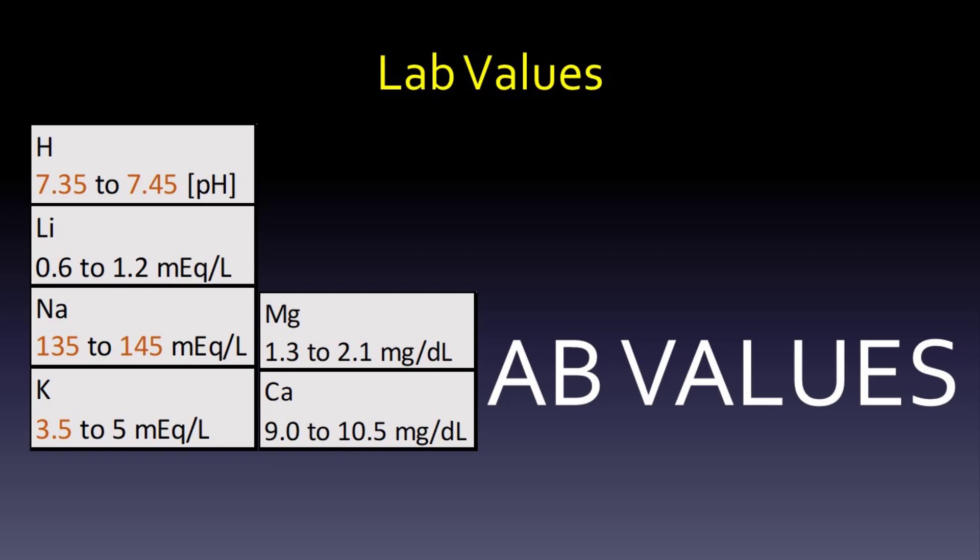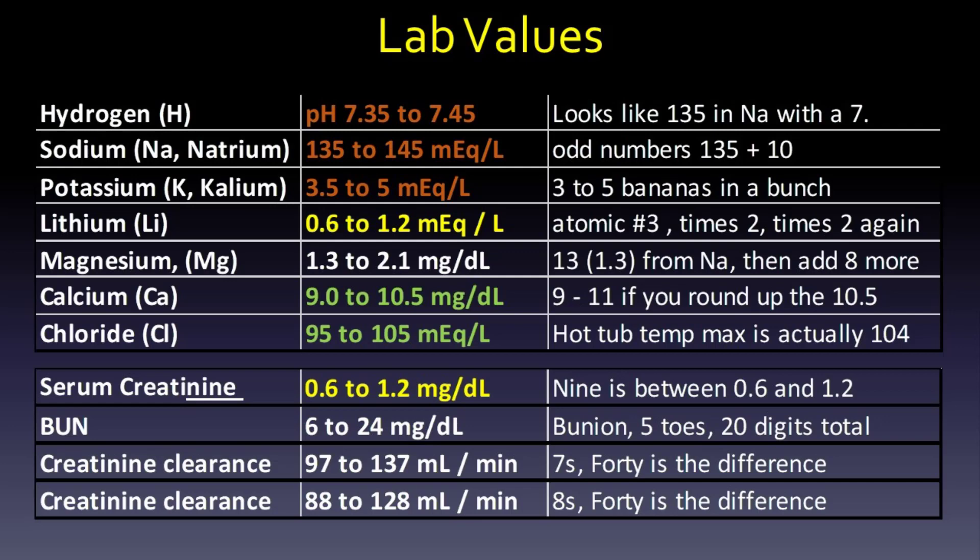You can take that 35 from sodium and make it the 3.5 from potassium — 3.5 to 5 milliequivalents per liter. So just a quick way to put hydrogen, sodium, and potassium together. Another mnemonic: underline the OD in sodium to make odd numbers — the first three odd numbers are 1, 3, and 5, and you just add 10. For potassium, 3.5 to 5 — I've heard '3 to 5 bananas in a bunch, and they're half off,' giving you 3.5 to 5.